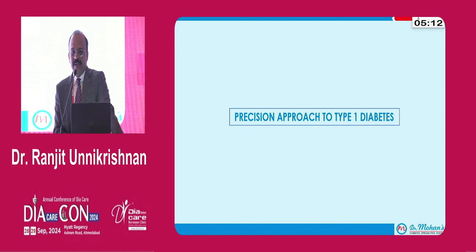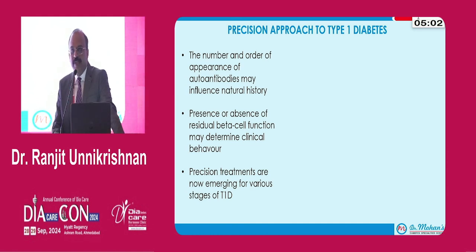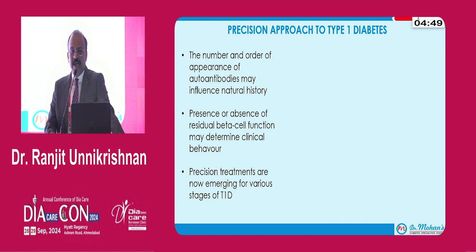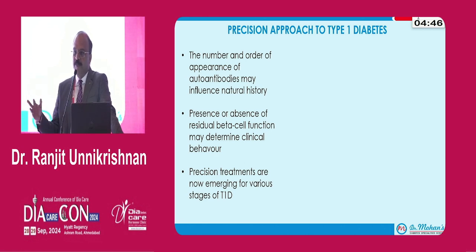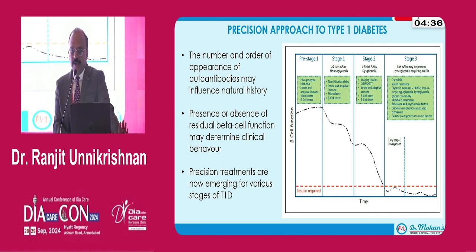What about type 1 diabetes? Not all type 1 diabetes cases are similar — they may vary in the number and type of autoantibodies, and in the presence or absence of residual beta cell function, which makes a big difference. If you have residual beta cell function, you tend to have a much easier journey with type 1 diabetes. Until recently there was no point in subdividing these patients because treatment was the same — insulin — regardless of autoantibody status.